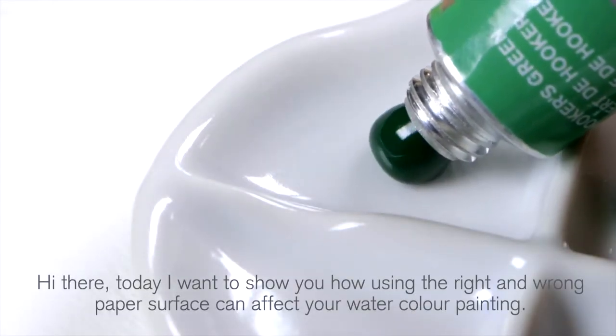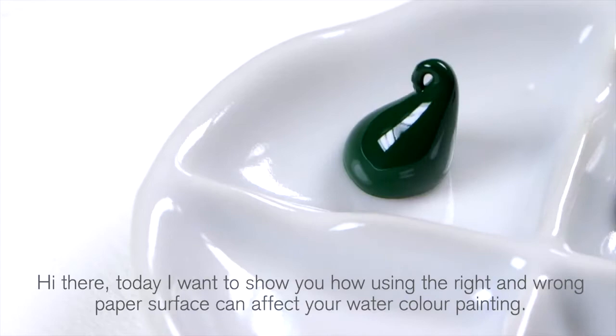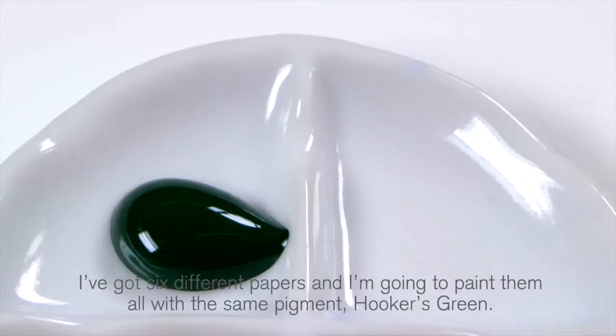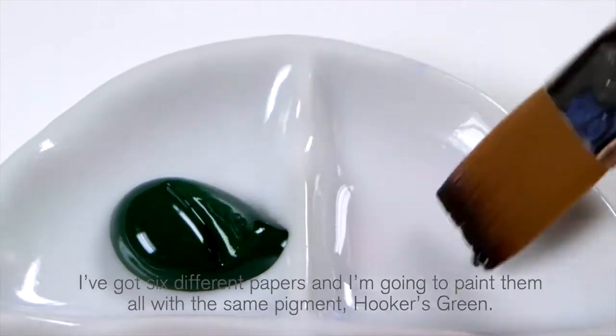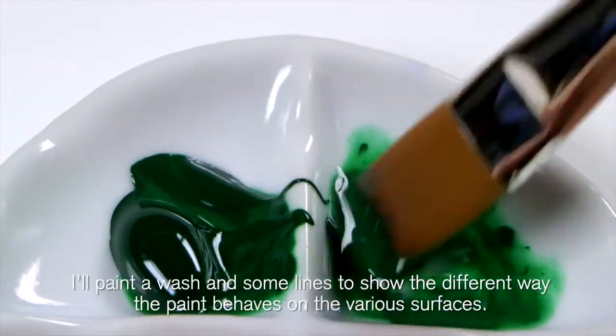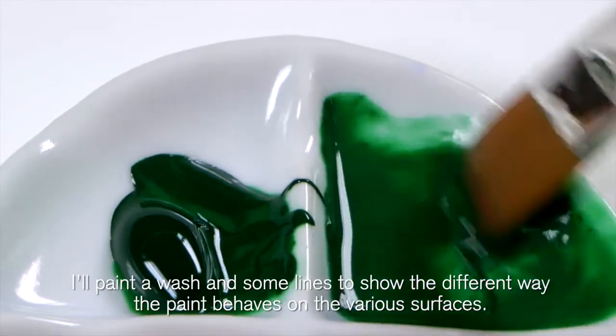Hi there. Today I want to show you how using the right and wrong paper surface can affect your watercolor painting. I've got six different papers and I'm going to paint them all with the same pigment, Hooker's Green. I'll paint a wash and some lines to show you the different way the paint behaves on the various surfaces.